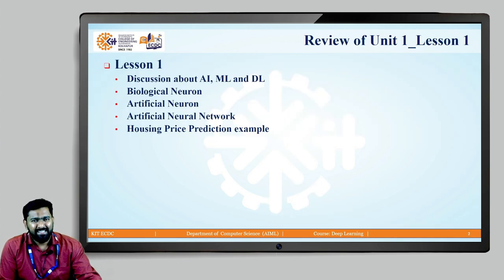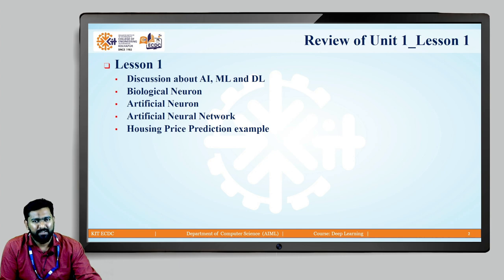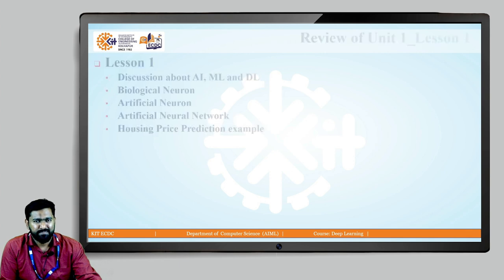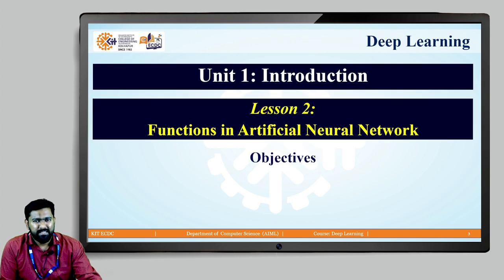In the last lesson we have discussed about artificial intelligence, machine learning and deep learning. We have seen the biological neuron, how an artificial neuron looks like, how we formed an artificial neural network, and we have seen the example of housing price prediction also. In this lesson we are going to see the functions in artificial neural network. The main function we are going to see is the activation function.